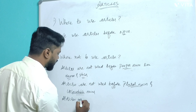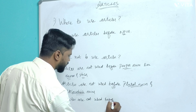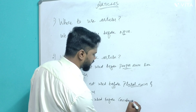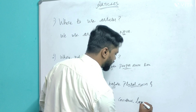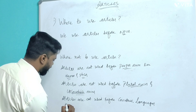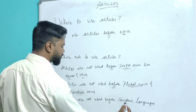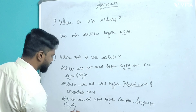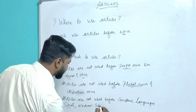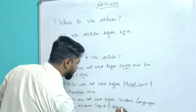Again, we are not supposed to use articles before plural nouns and uncountable nouns. The third point: articles are not used before countries, languages, sports, academic subjects, and diseases.